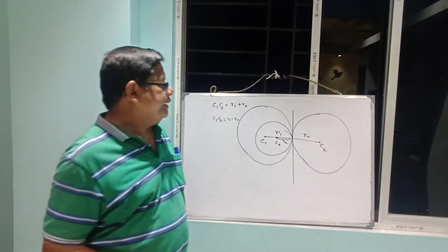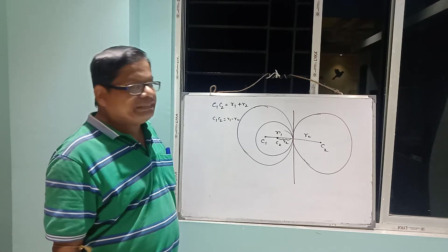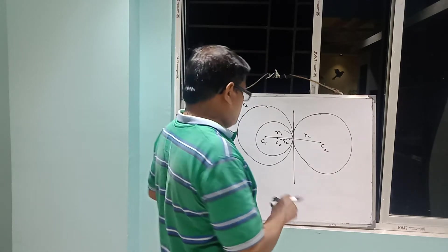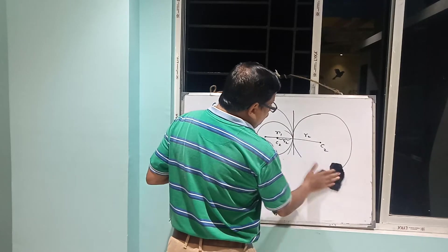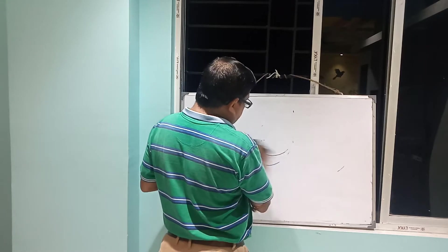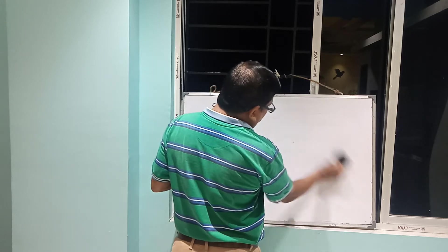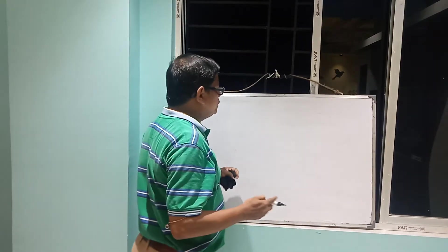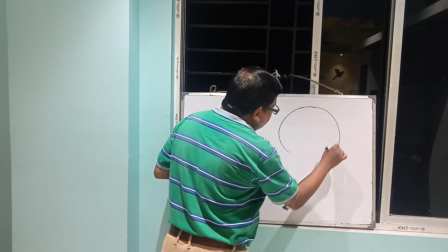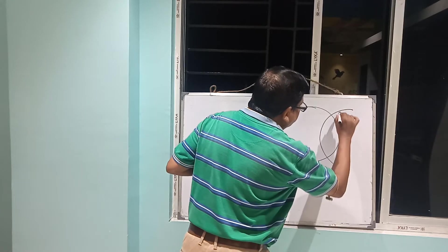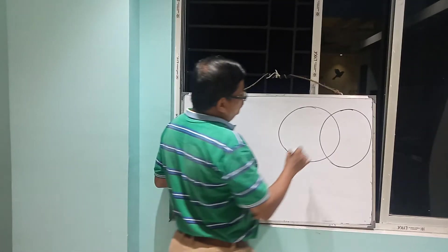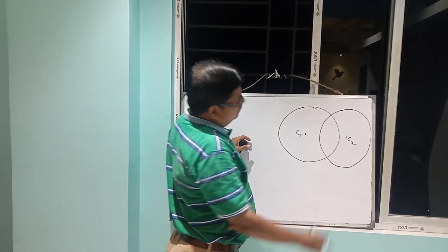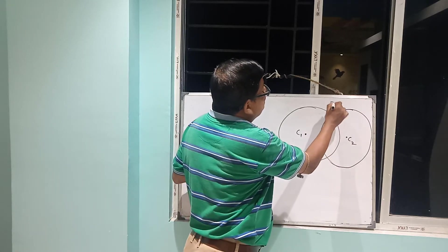Now, if two circles intersect each other, what is the equation of the common chord? Look here — two circles intersect each other. This is center C₁ and this is center C₂. The two intersection points are P and Q, and the line PQ is the common chord.